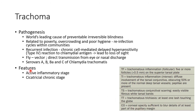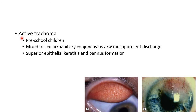Trachoma can be divided into active inflammatory stage and cicatricial chronic stage. Active trachoma is usually seen in pre-school children. There will be mixed follicular or papillary conjunctivitis associated with mucopurulent discharge. There will be superior epithelial keratitis and pannus formation.